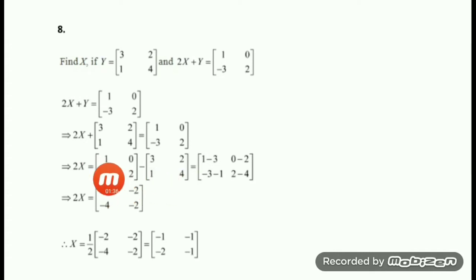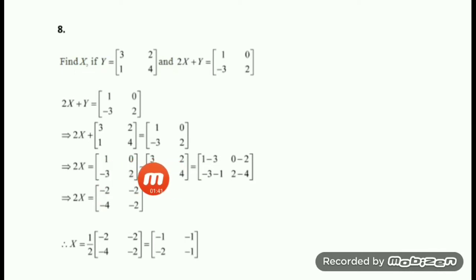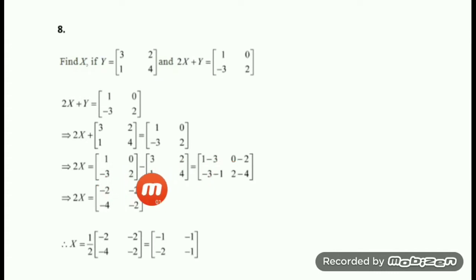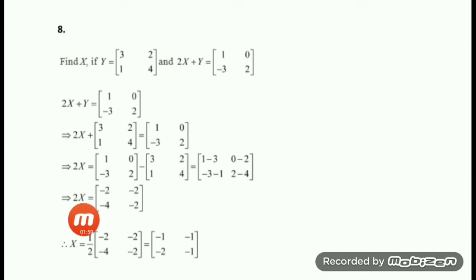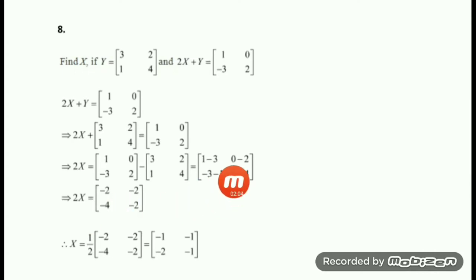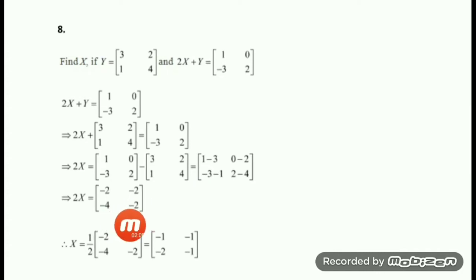Now do the calculation — these are comparable 2×2 matrices. So we can subtract: first row first column is 1 minus 3, first row second column is 0 minus 2, then second row first column is -3 minus 1, and second row second column is 2 minus 4.